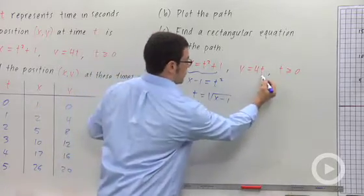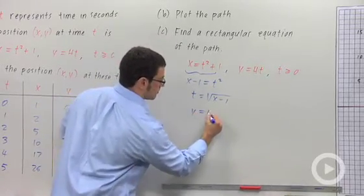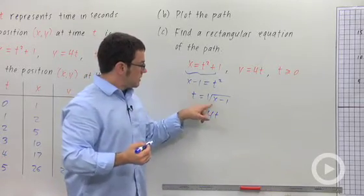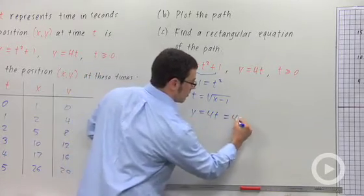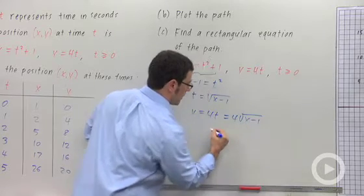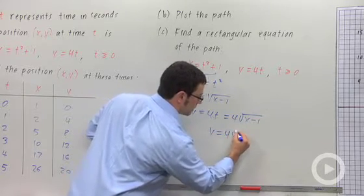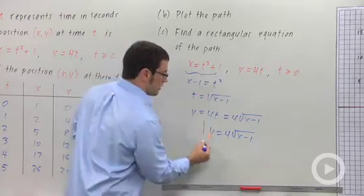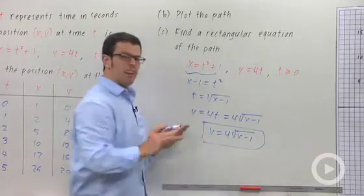Now, y equals 4 times t, and so I can substitute t in here, t is root x minus 1. And so, my rectangular equation is y equals 4 times root x minus 1. This equation doesn't have any t values in it,